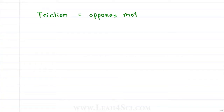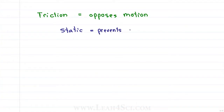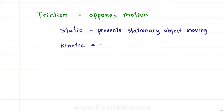Friction is a force that opposes motion and we have two types. Static friction opposes the motion of something static or stationary, meaning it prevents a non-moving object from starting to move. Kinetic implies motion, therefore kinetic friction will slow down an object that is already in motion.